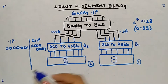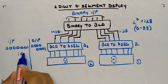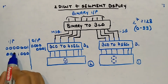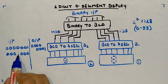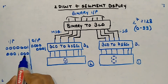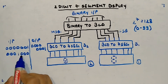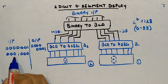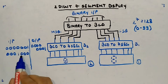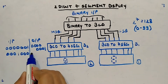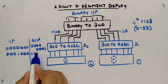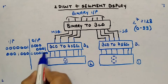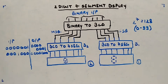Let's say the input is 1000000 — that is 2 to the power 0 through 2 to the power 6. This represents eight. So the output for eight would be 00001000, that is how the output will look.